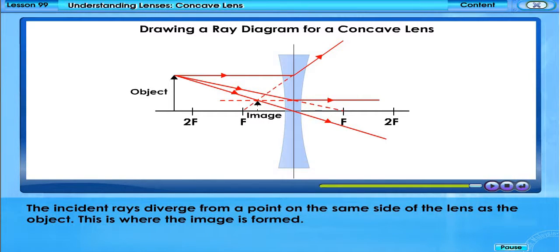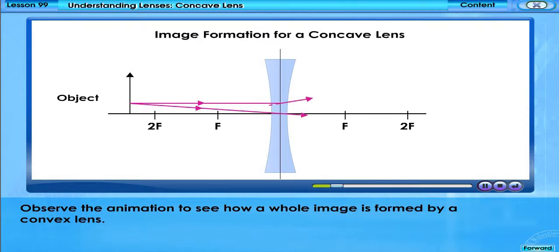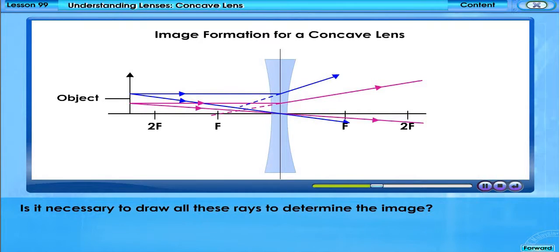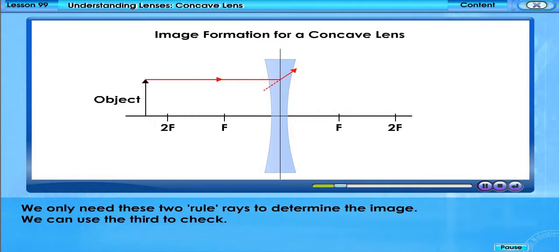The incident rays diverge from a point on the same side of the lens as the object. This is where the image is formed. Observe the animation to see how a whole image is formed. Is it necessary to draw all these rays to determine the image? We only need two rule rays to determine the image; we can use the third to check.